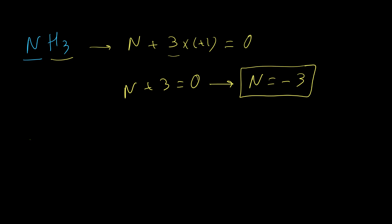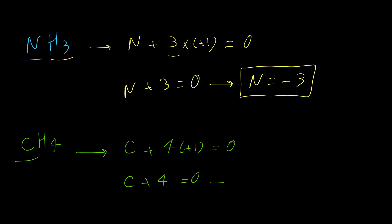Next, let's find the oxidation number for carbon in methane, CH4. For carbon, we don't know the oxidation number. Hydrogen is +1 and there are 4 hydrogen atoms, so 4 times +1. The total should be 0 because the molecule is neutral. So carbon + 4 = 0, which means carbon = -4.